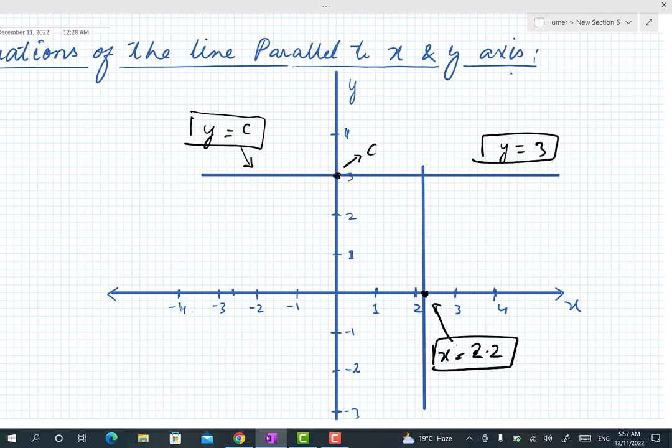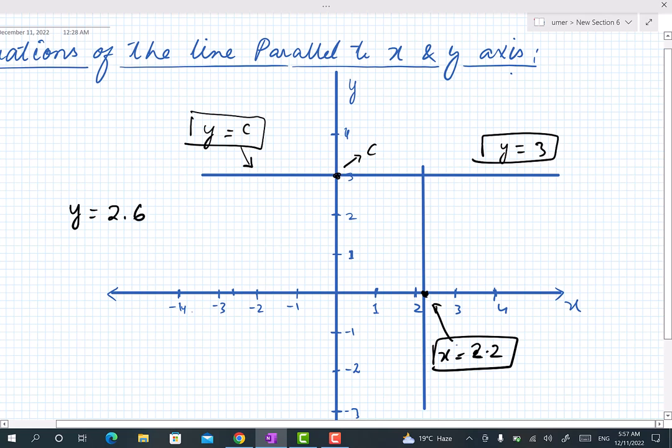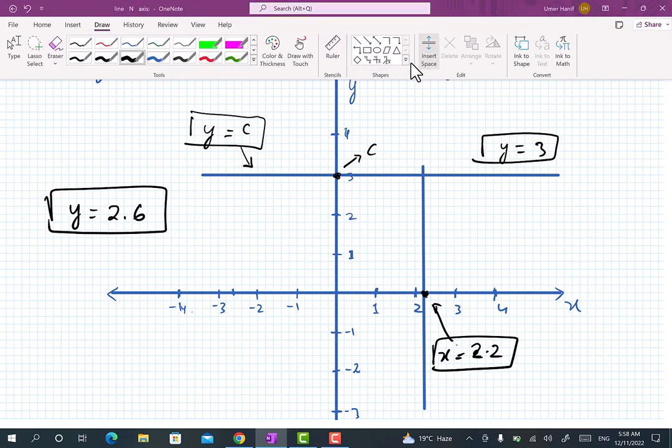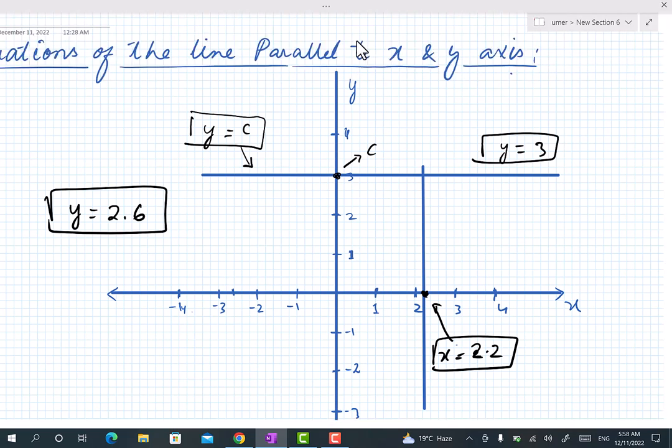Like y equals 2.6 and we have to make its line, what we're gonna do is we will simply see where the value of y is 2.6. Simply see that 2.2, 2.4, and 2.6, this will be the point where we will draw a line.